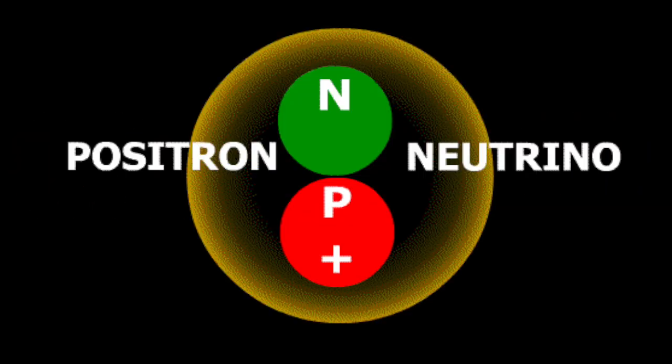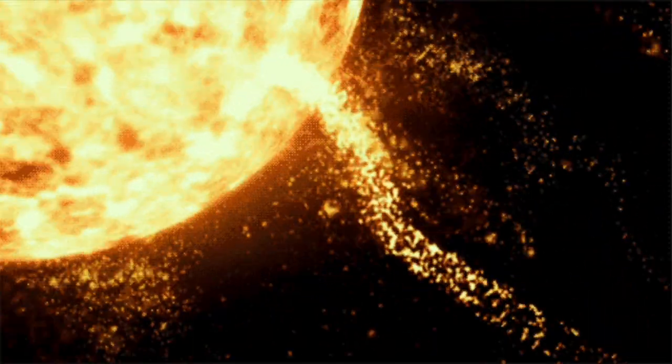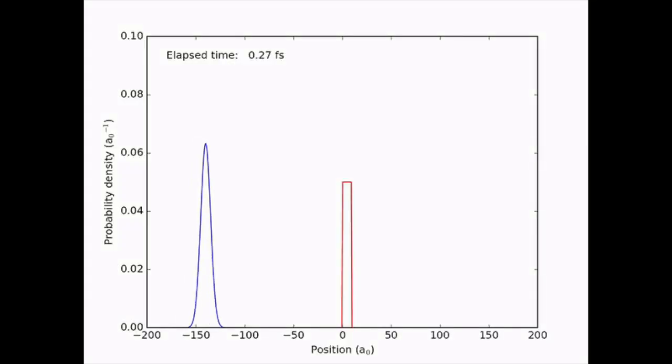Quantum tunneling plays a vital role in nuclear fusion within stars and allows the sun to shine by overcoming the Coulomb barrier. The likelihood of tunneling through an energy barrier depends on various factors.